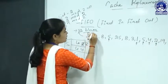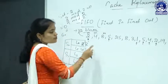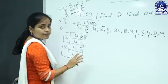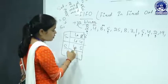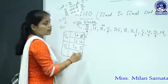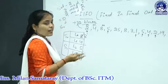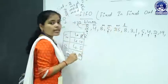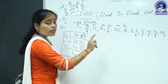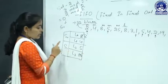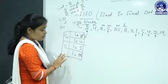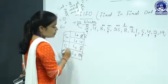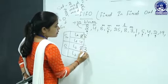Then block 8 is requested — block 8 is already in cache, so it is a hit. Then block 3 comes: 3 mod 2 = 1, so it goes to set 1. Block 3 is not present — cache miss. Using FIFO for set 1, block 5 entered first, so replace block 5 with block 3. Next block 1: 1 mod 2 = 1, placed in set 1. Block 25 is the next oldest in set 1 (block 5 was already replaced), so replace block 25 with block 1 — also a miss.